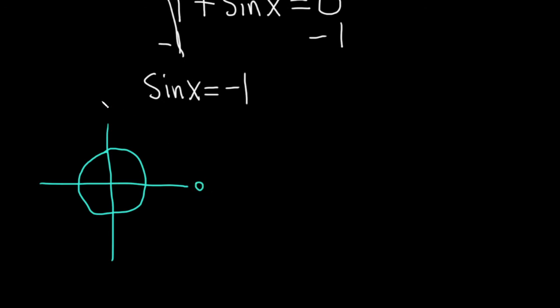And this is 0, pi over 2, pi, 3 pi over 2. And 0 can also be thought of as 2 pi.